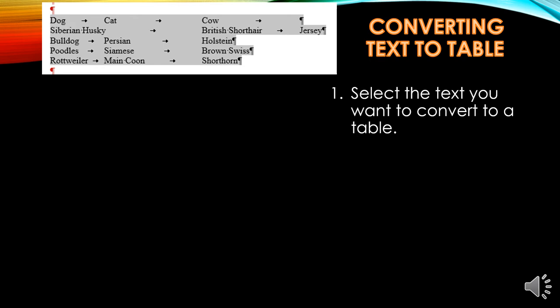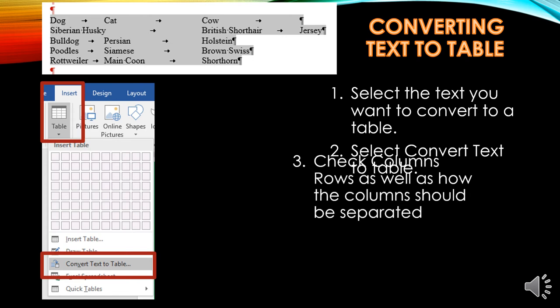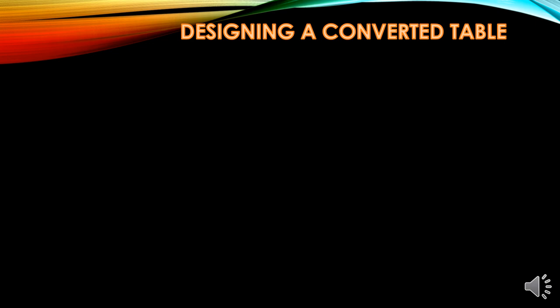Converting text to a table. When you have a series of text you want to put into a table, select the text, then select Convert to Table — make sure you do not select Insert Table, but Convert Text to Table. Check the columns, rows, and how the columns should be separated. In this case, we want four columns separated by tab. Then click OK.